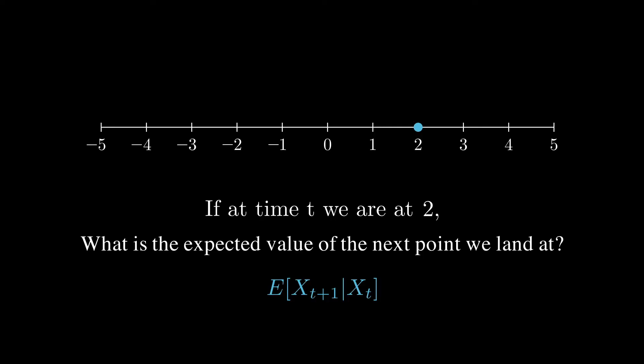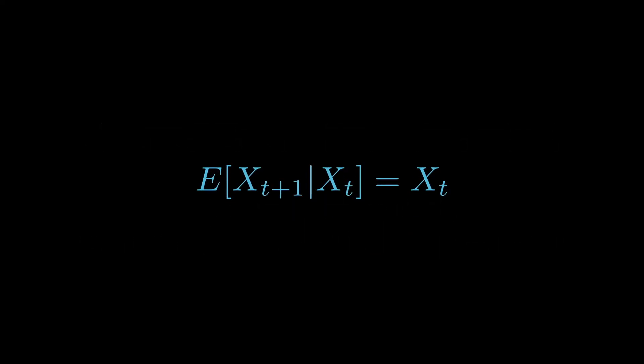Rather than conditioning on X_t equal to 2, what if we just condition on X_t? This basically means that if we're currently at X_t, what is the expected value we land on? And we know the answer to that. Since we're moving up and down with equal probability, we expect to land on the same value.